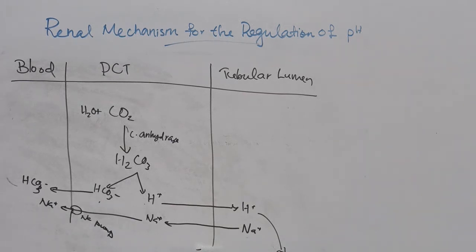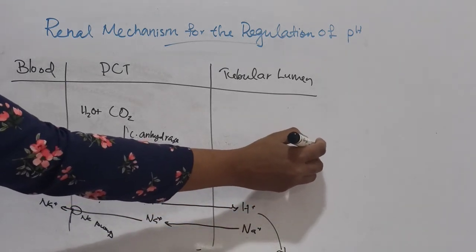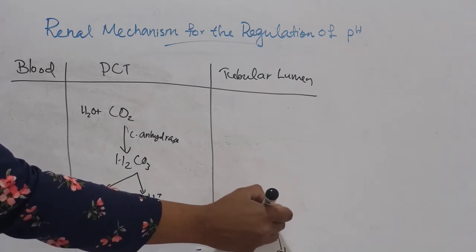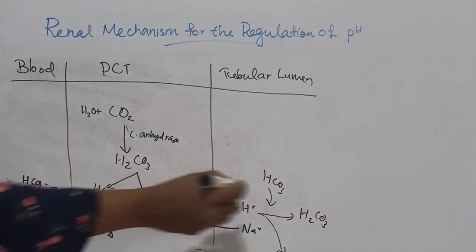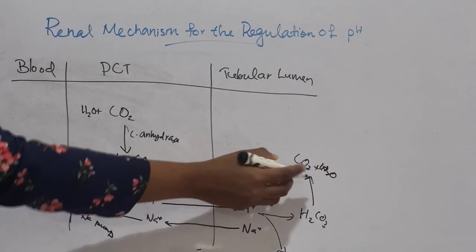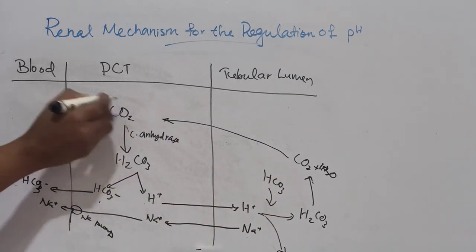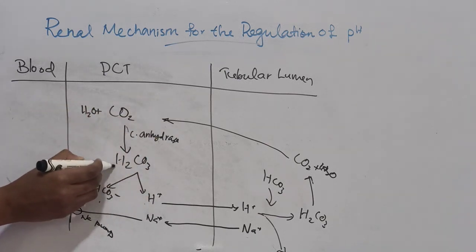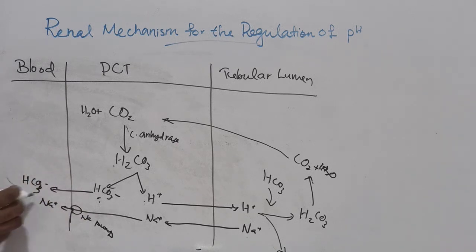The second mechanism is the bicarbonate mechanism — the recovery or reabsorption of bicarbonate. Filtered bicarbonate combines with H+ ions to form carbonic acid (H2CO3). This carbonic acid dissociates to CO2 and water with the enzyme carbonic anhydrase. CO2 is diffusible and enters the tubular cell, where it forms carbonic acid again with water and carbonic anhydrase. That carbonic acid dissociates to H+ and HCO3−, and the HCO3− is reabsorbed into the blood along with sodium.